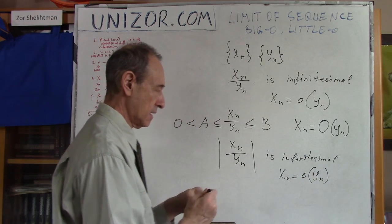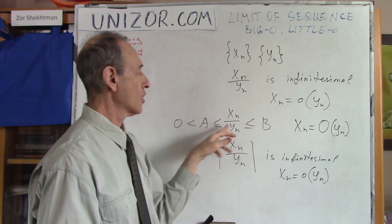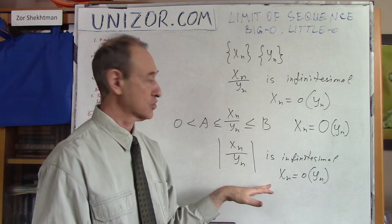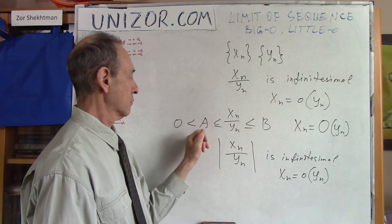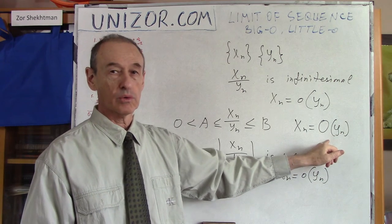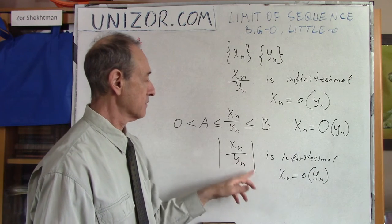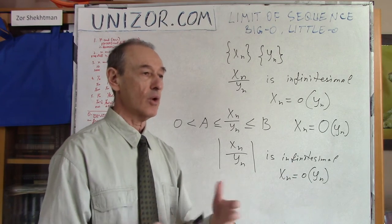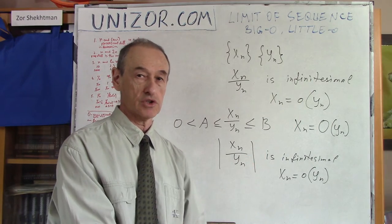Basically, we have exactly the same definition for sequences going to infinity and sequences going to zero as infinitesimals. If the ratio between them is within certain positive boundaries — strictly greater than zero — they grow or diminish at the same speed. If the ratio is infinitesimal, it's little o. This is the big O, little o notation for describing the rate of change, whether infinitely growing or diminishing to zero.